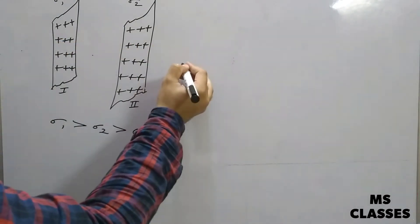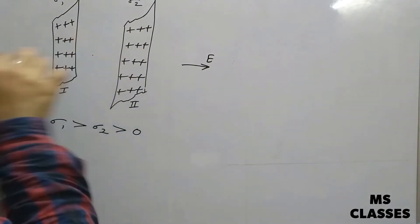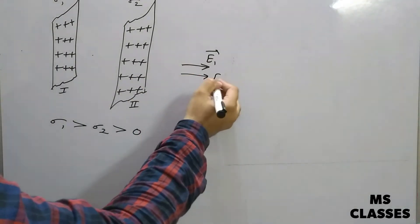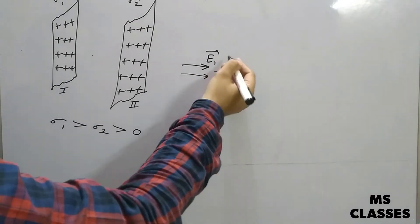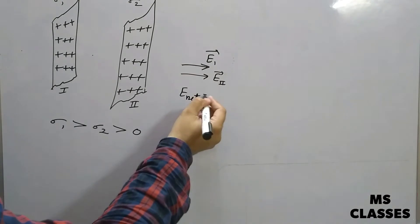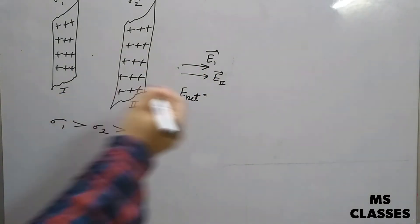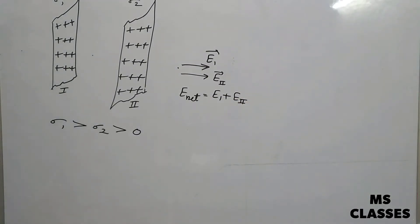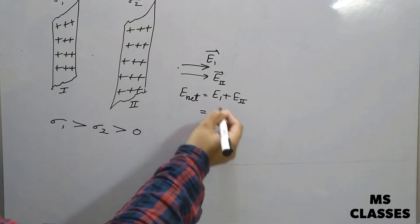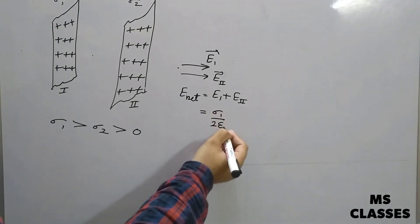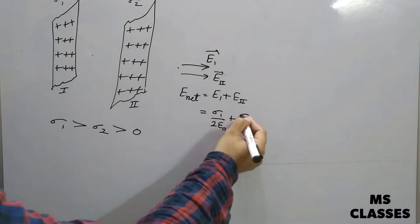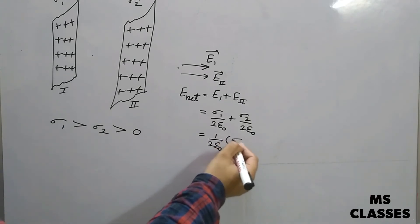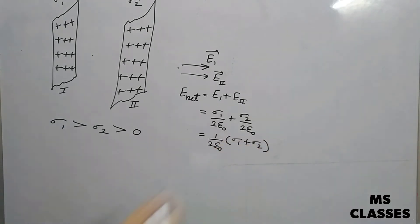At the leftmost point, the electric field due to the first sheet points in the positive x-direction (outward, since charge is positive), and the electric field due to the second sheet also points in the positive x-direction. So the net electric field at this point is E1 plus E2, which equals sigma 1 by 2 epsilon naught plus sigma 2 by 2 epsilon naught, giving (sigma 1 + sigma 2) / 2 epsilon naught.